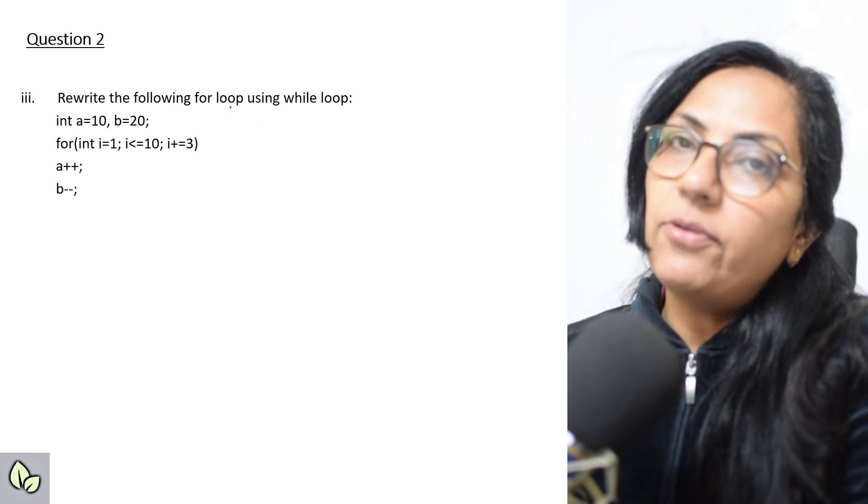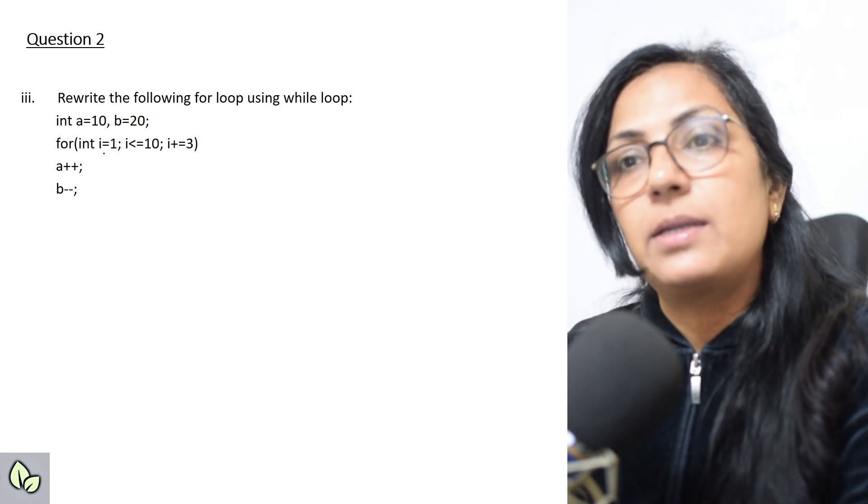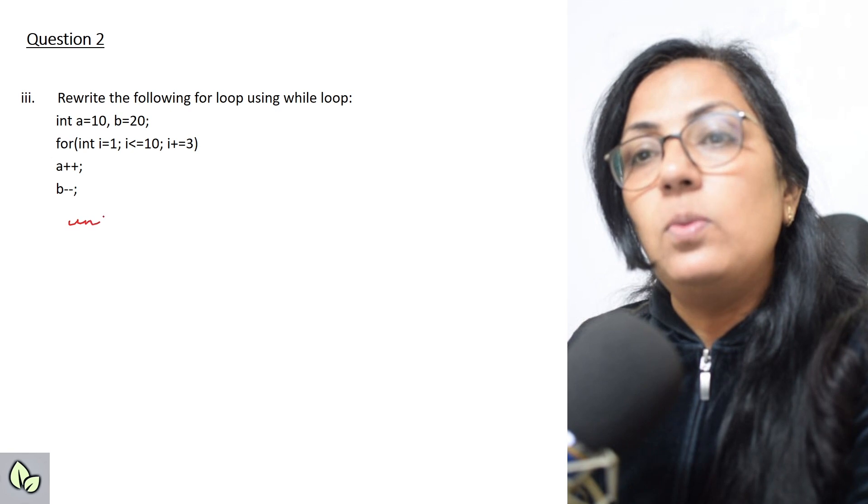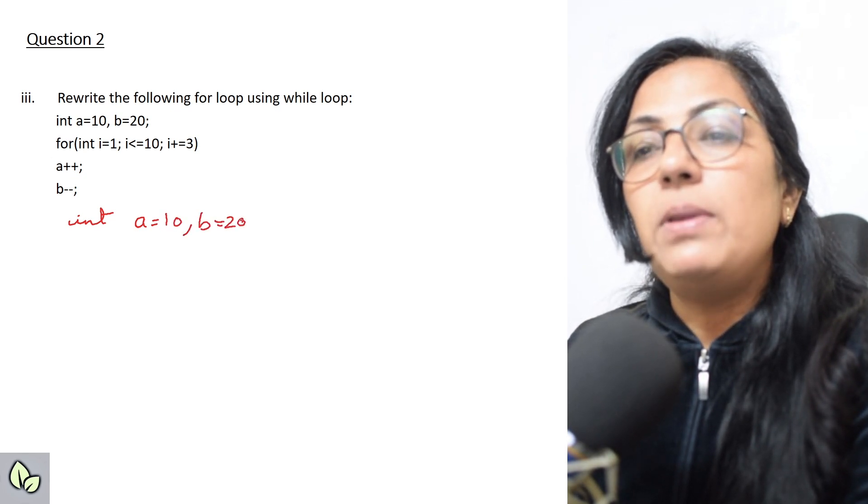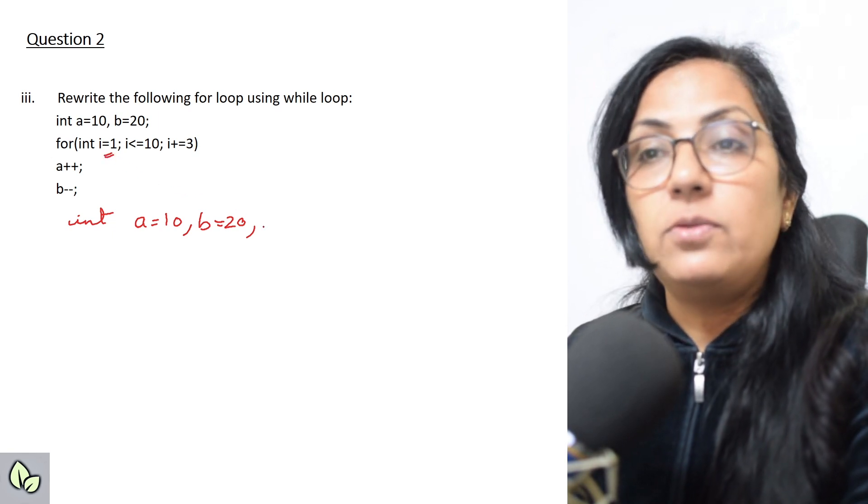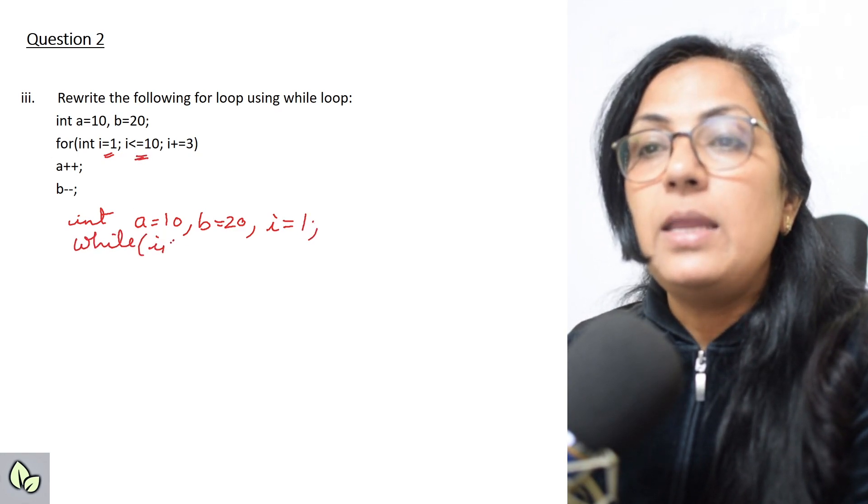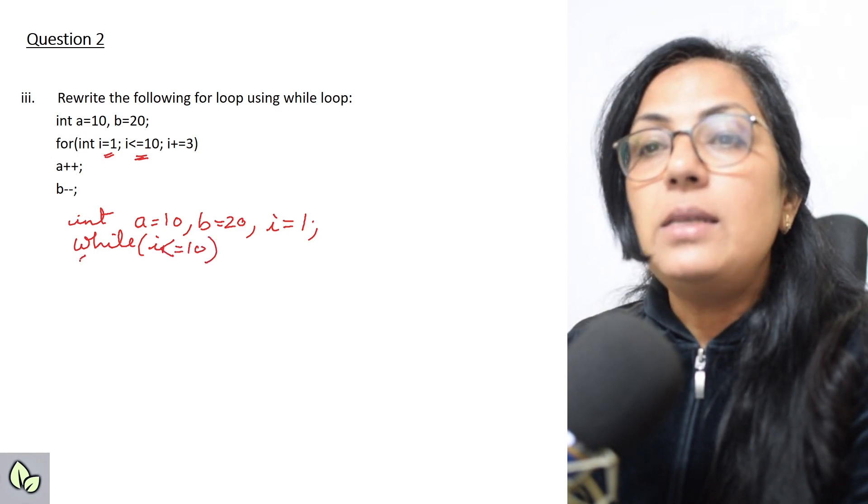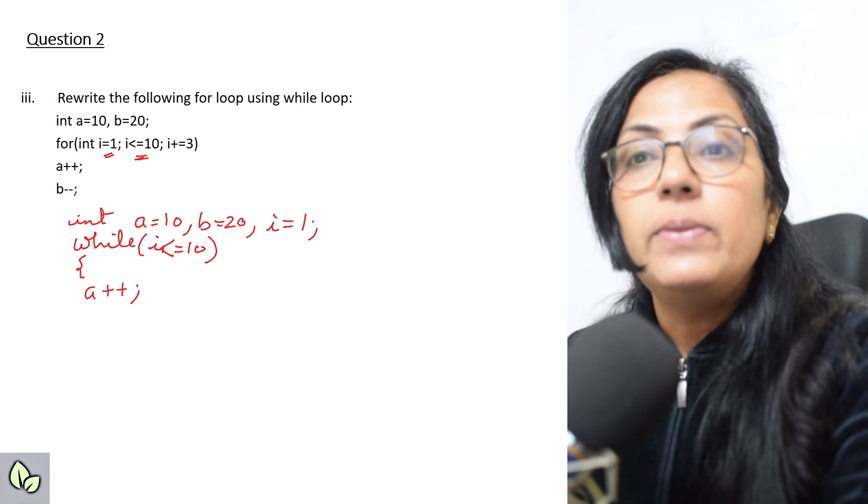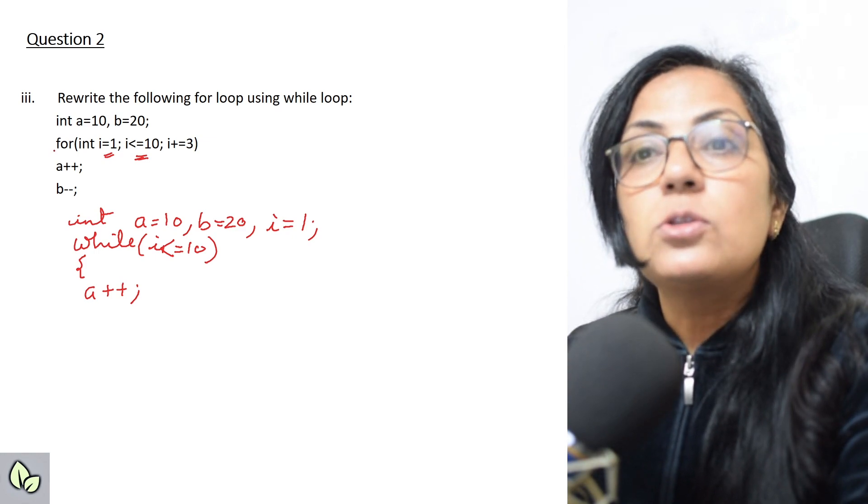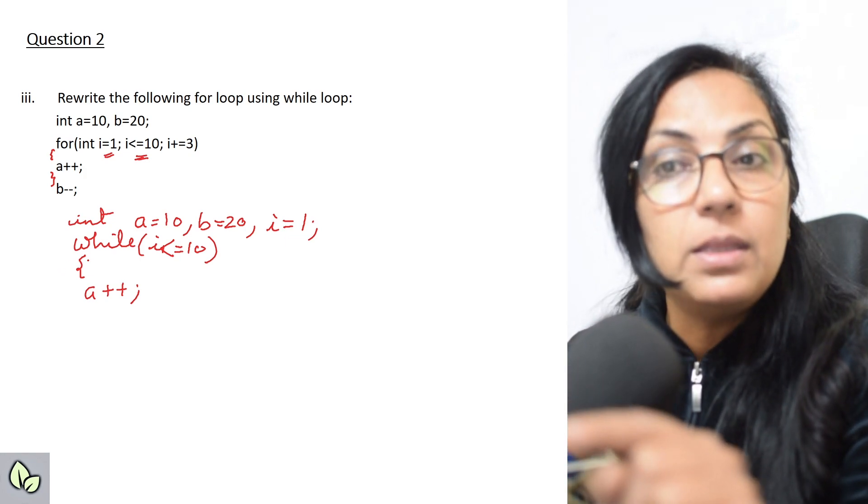Rewrite the following for loop using while loop. Children, please check the video for conversion. In while loop, whenever we convert for into while, then initialization is done before the loop. So int a equals to 10, b equals to 20 is already given. This initialization part which is in for, that also we have to do before the loop. Test condition will be with while: i less than equals to 10. And then the body of the loop, a plus plus is given.